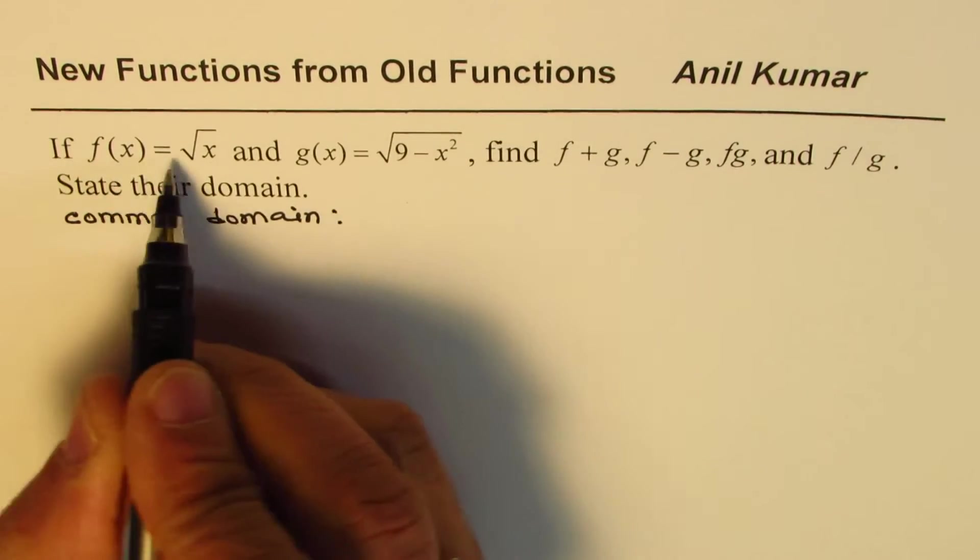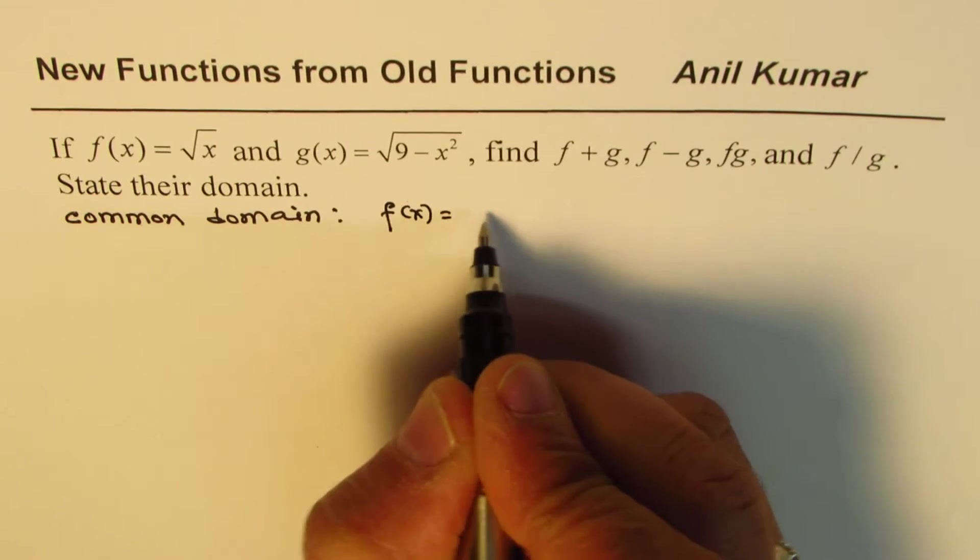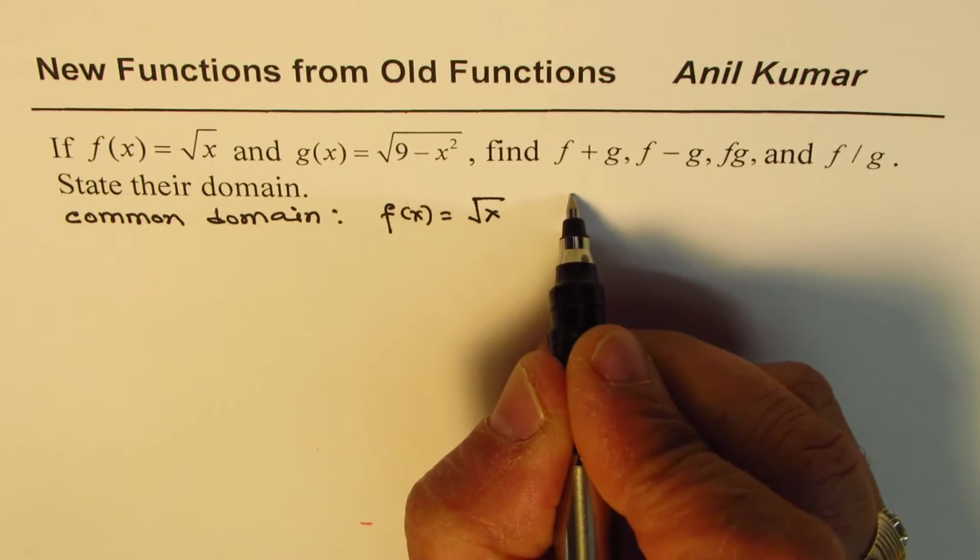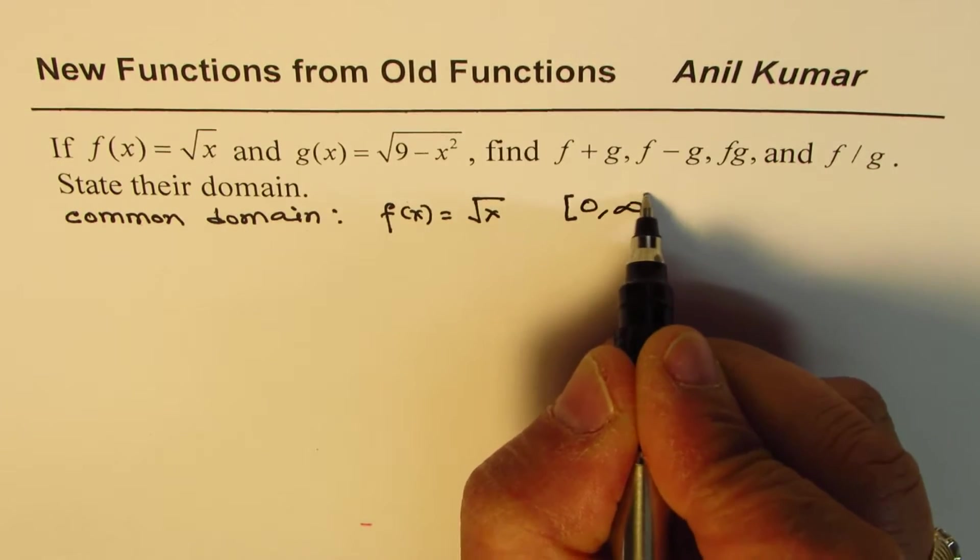Let's look into the domain of f(x). f(x) equals square root of x. So the domain of this function is from 0 to infinity.